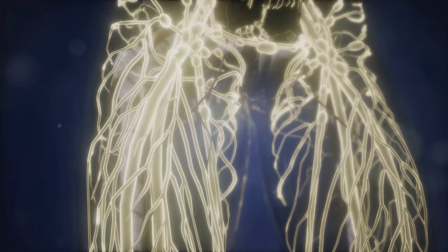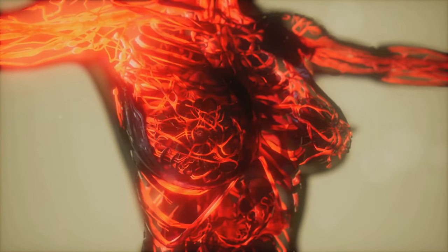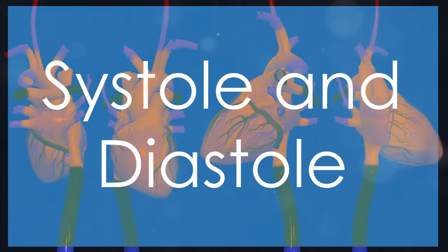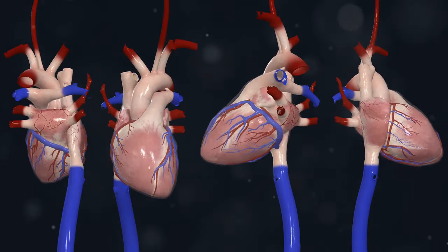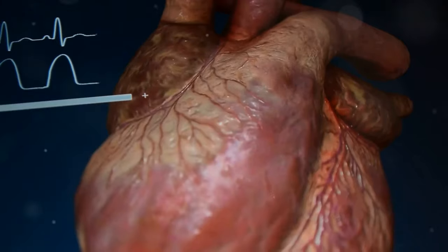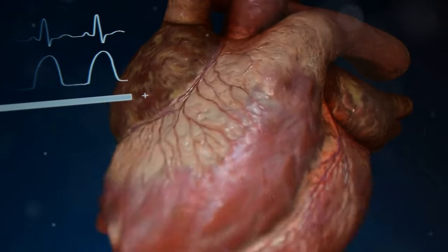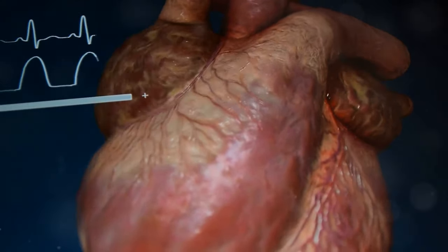Decoding the Cardiac Cycle: Systole and Diastole. The cardiac cycle can be broken down into two main phases: systole and diastole. Systole is when the heart muscle contracts, pushing blood out of the ventricles and into the arteries.